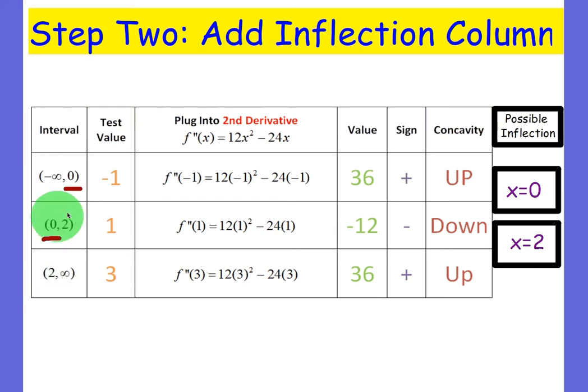So from one row to the next, at these two intervals, they meet at zero. So there's a possible inflection point at x equals zero since it goes from up to down right there at those two intervals. Same thing from zero to two and two to infinity. They share the value of two and it goes from down to up there. So there's a possible inflection point at x equals two.